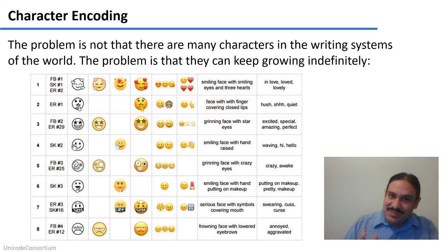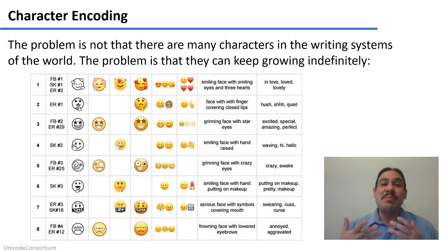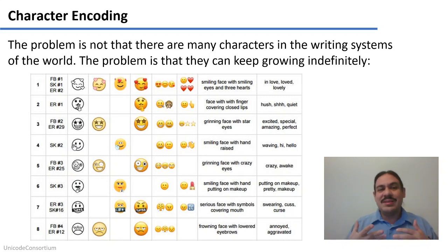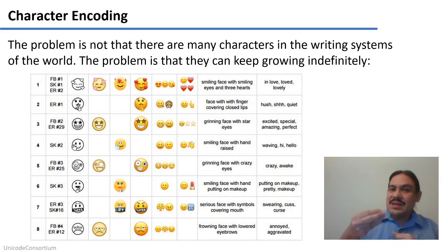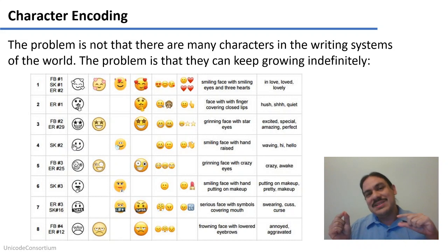The main problem is not just that there are many characters in the writing systems of the world — it's that they can keep on growing, potentially indefinitely. This is happening with emojis right now. They are being included in Unicode and represented as characters, so that each device can represent them using their special font. That's why emojis look different depending on the device you're using. But as more and more emojis are included in Unicode every year, eventually we're going to overflow and need more bytes to represent things — so every character might need to be represented by three or four bytes.